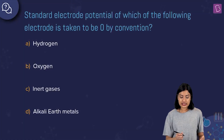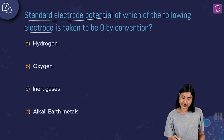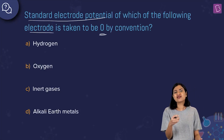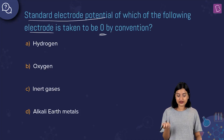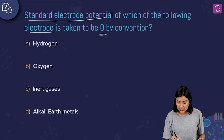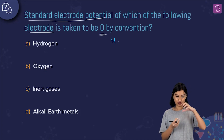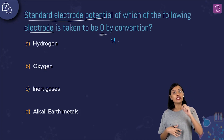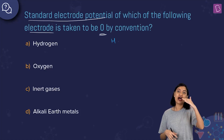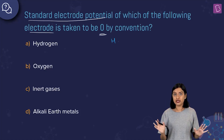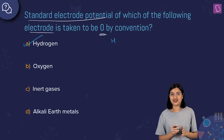The next question asks which electrode has its standard electrode potential taken as zero by convention. The answer is the hydrogen electrode. All standard electrode potential values (E° values) are measured relative to the standard hydrogen electrode, whose potential is defined as zero. So option A, hydrogen, is the correct answer.